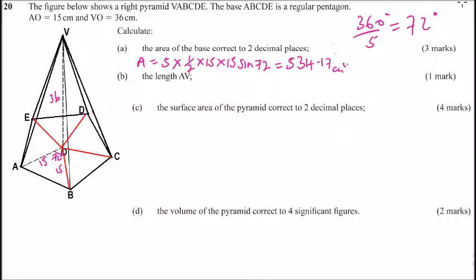Part b, we are told to calculate AV. AV is a slanting side. If you look at triangle AVO, it is a right angle triangle. So we can use the Pythagoras theorem.